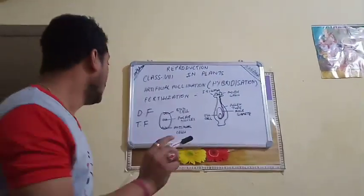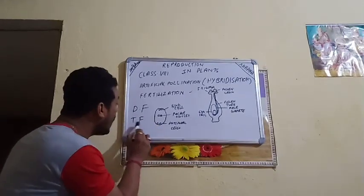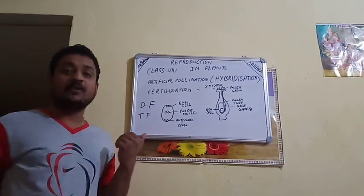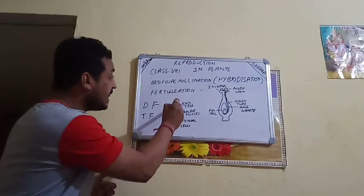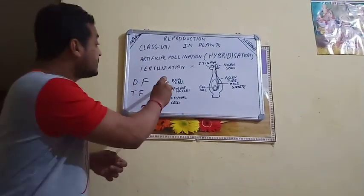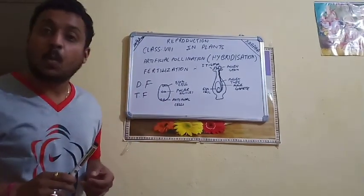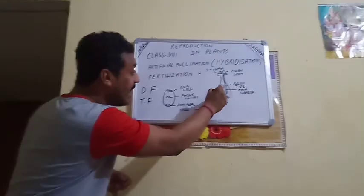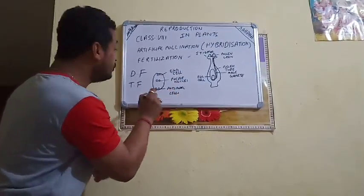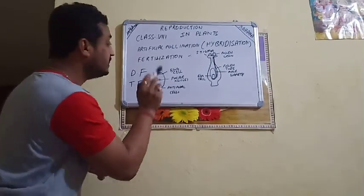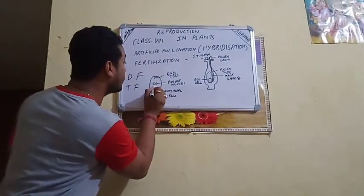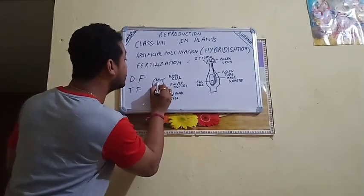We need to understand why it is called double fertilization and why triple fusion. I have made a diagram here. In the diagram we can see: egg cell at the top, polar nuclei, and antipodal cells. The male gametes have entered the ovary. One male gamete will fertilize the polar nuclei, and another male gamete will fertilize the egg cell.